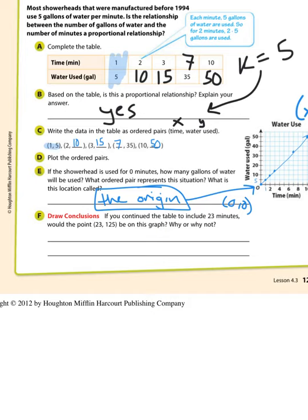If you continue the table to include 23 minutes, would the point 23, 125 be on this graph? Why or why not? How do we figure this out? We check if 23 times 5 is equal to 125. And it is not. So no, this point would not be on the graph.